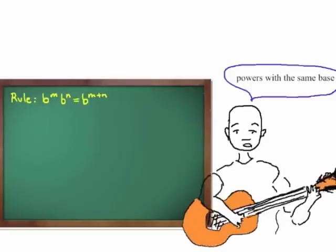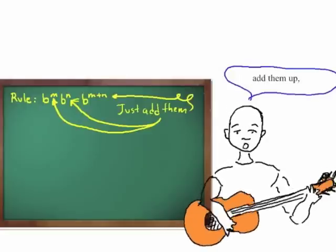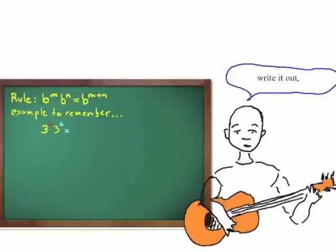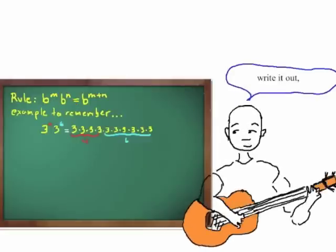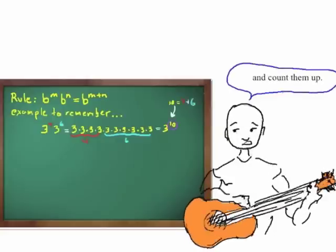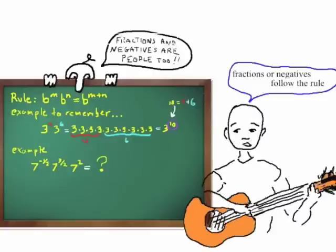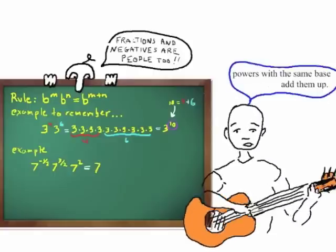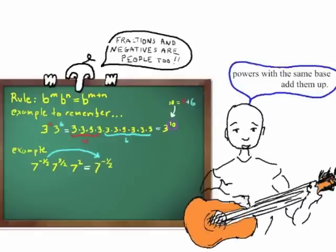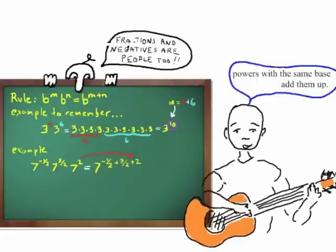Powers with the same base, add them up. Write it out, count them up. Fractions or negatives follow the rule — powers with the same base, add them up.